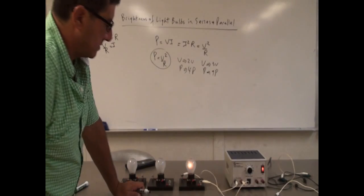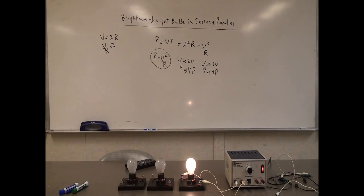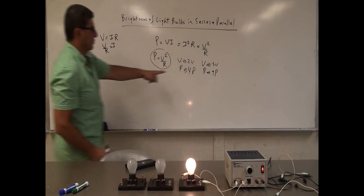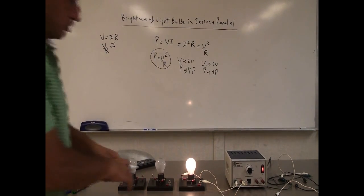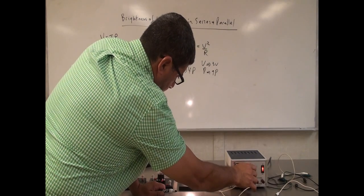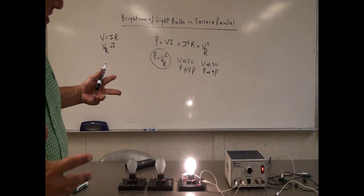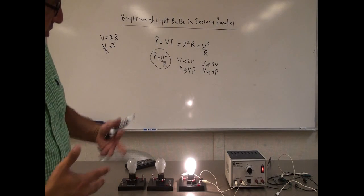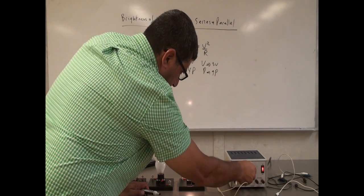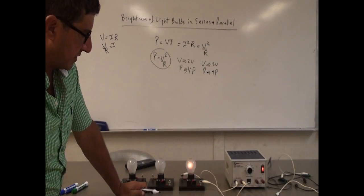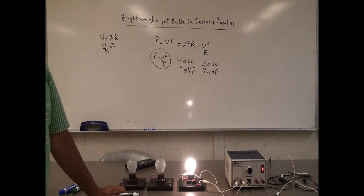Going back down to four volts — you can barely see it. Then you double the voltage to eight and it's four times as bright. Now if I triple the voltage, that means going from four volts all the way to 12 volts — it should be nine times as bright. At 12 volts, that's a lot, lot brighter. We would say it's probably around 10 times brighter to the eye, but mathematically it works out to be exactly nine times as bright. Going back to four volts you can barely see it, then triple the voltage to 12 — a lot, lot brighter.